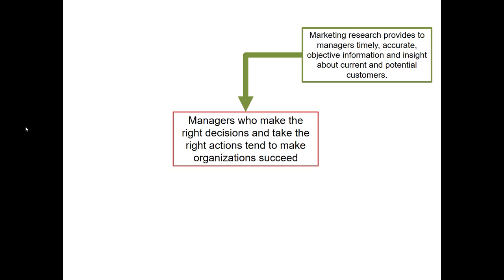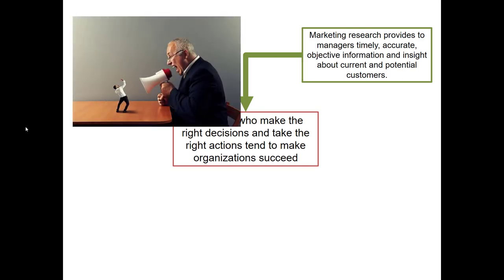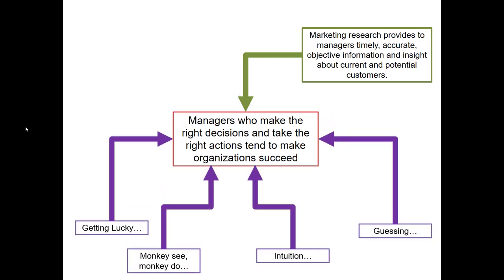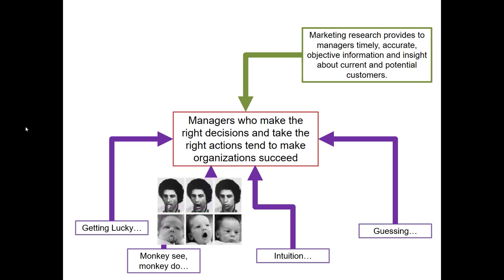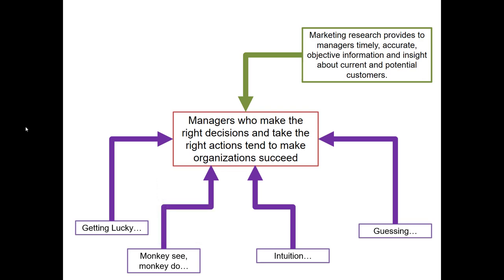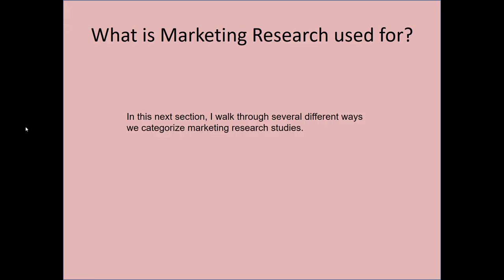It's worth keeping in mind that marketing research is not the only mechanism used to inform decision-making. Think about some bosses you've had in jobs in the past — some of the common ways they went about making decisions include simply guessing, using their intuition, or 'monkey see monkey do' imitation: just look at what a competitor or someone else successful is doing and imitate them, or simply getting lucky. In this class we'll rely on the research-based approach, but I don't mean to completely dismiss these other approaches — every single one has something going for it, in that they tend to take less time, less money, and less effort.